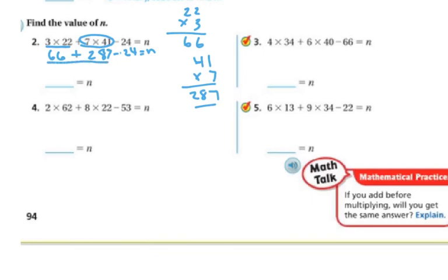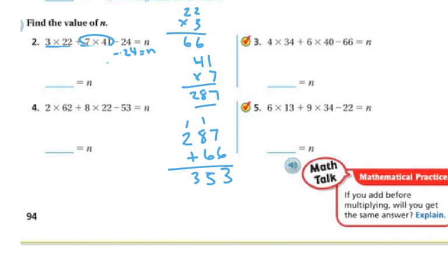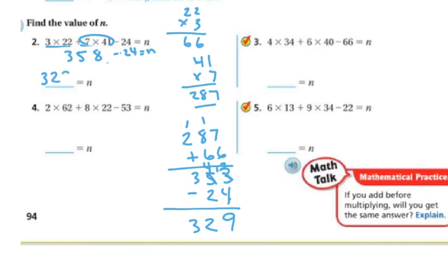So now I'm doing 66 plus 287. So 287 plus 66: 6 plus 7 is 13, 8 plus 1 is 9 plus 6 is 15, regroup my 100, 2 plus 1 is 3. So 358 minus 24. I can't take 4 from 8, so I regroup. This gives 13 minus 4 is 9, 4 minus 2 is 2, and then my 3. So my answer is 329, which is n.